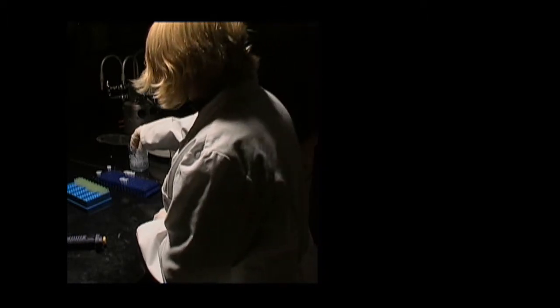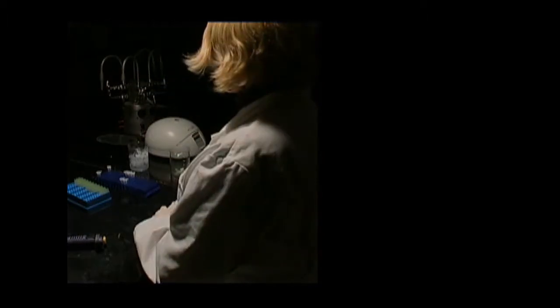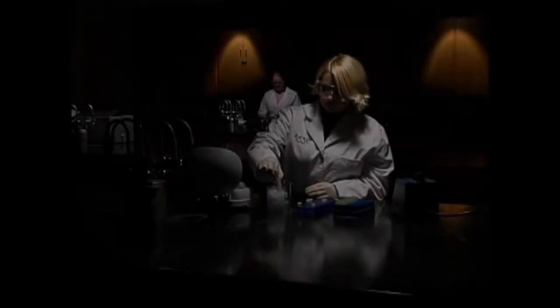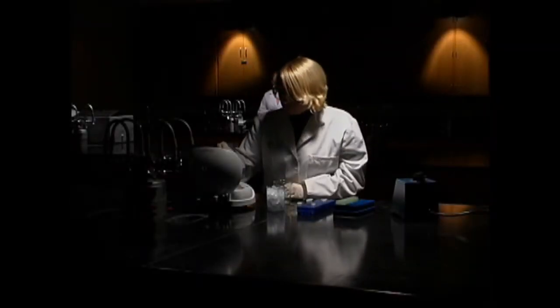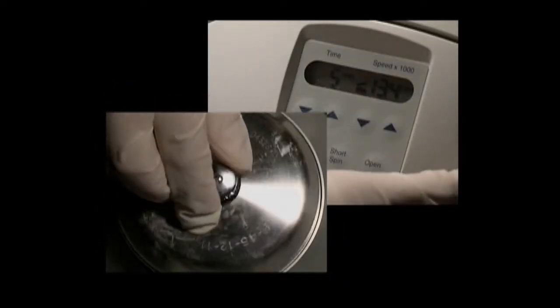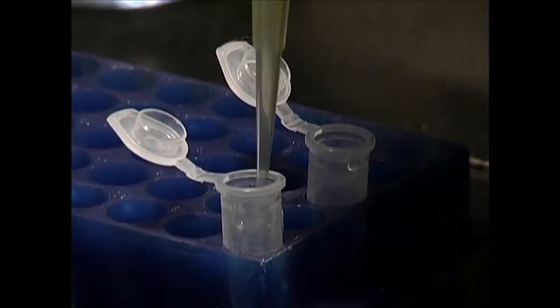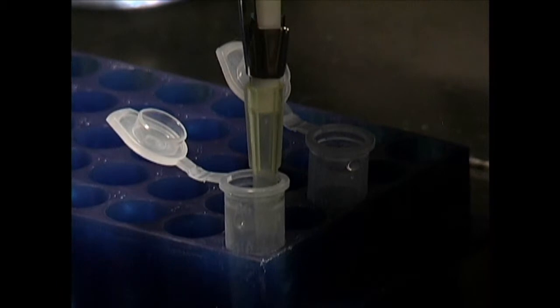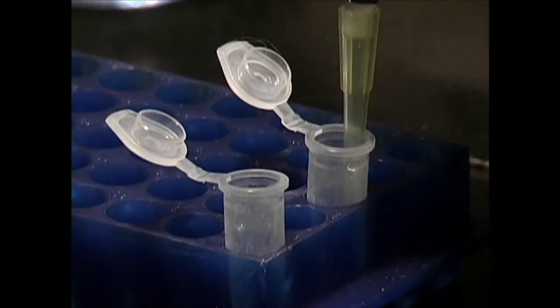Ice the tube for 4 more minutes. Place the tube in a microcentrifuge, and run it at full speed for 5 minutes to facilitate the precipitation of unwanted fragments. When it's done, a pellet of unwanted fragments should have formed at the bottom of the tube. Pipet 0.5 milliliters of the supernatant into a fresh tube. This will contain plasmid DNA.